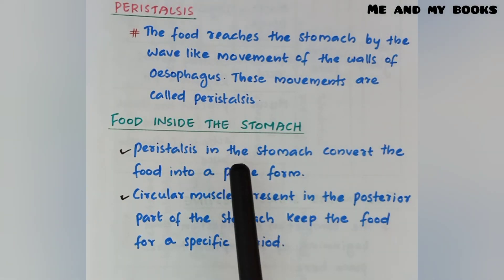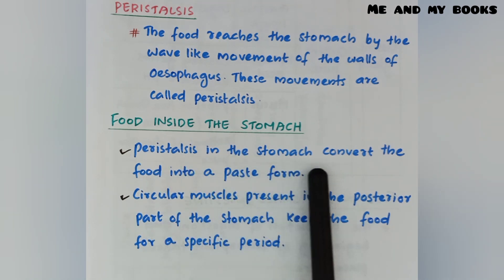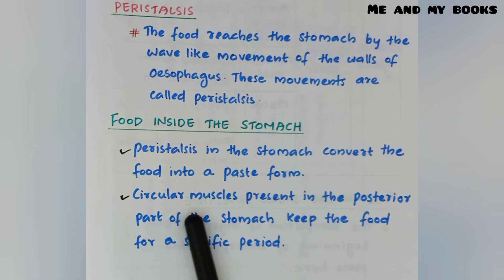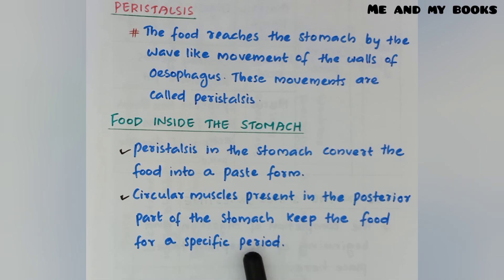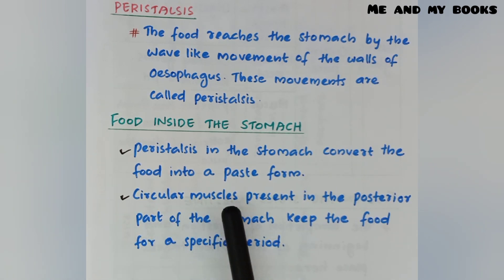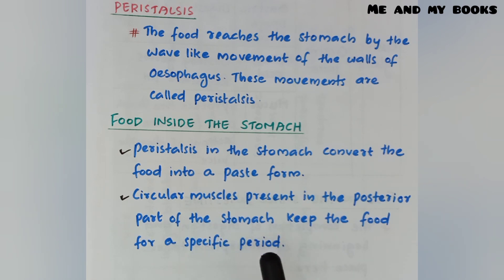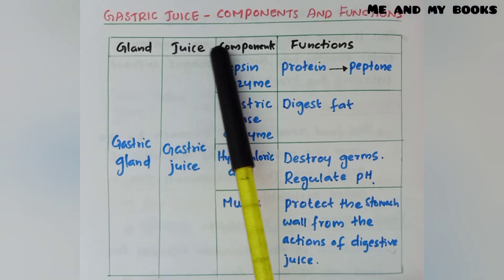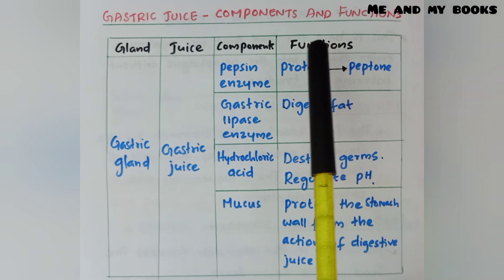Now food is inside the stomach. Peristalsis in the stomach converts the food into a paste form. The stomach also shows peristalsis. Circular muscles present in the posterior part of the stomach keep the food for a specific time so that digestion can occur inside the stomach.